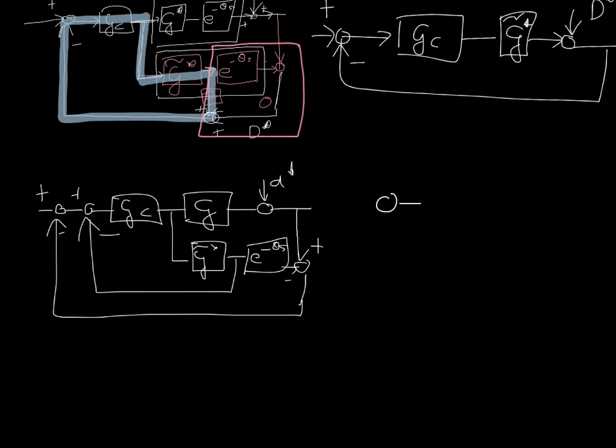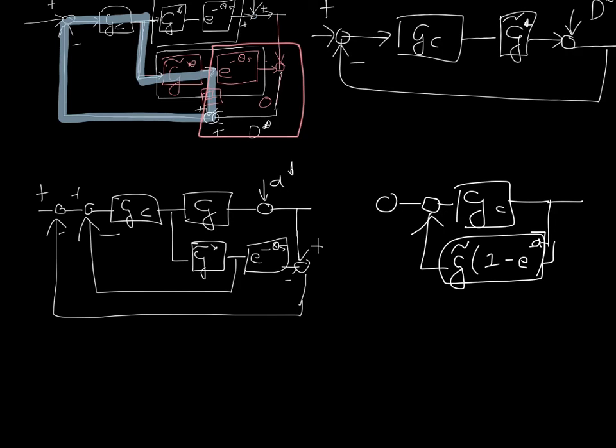Same approach, we've got two loops, but now we've got Gc and we've got this expression now. G tilde, one minus e to the minus theta s in this box. So we've got a small feedback loop over there.